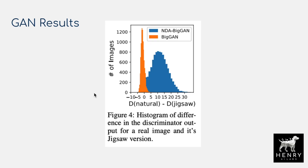The first interesting result applies NDA to the BigGAN training loop, showing the difference in the discriminator's output — its prediction of real versus fake for each image compared to the original and then the jigsaw-augmented version. Without NDA, the discriminator has basically the same prediction for the original image and its jigsaw augmentation, suggesting it's overfitting to local structures. With NDA, the discriminator has clearly learned that the jigsaw image is out of distribution, demonstrating that this prior has been successfully communicated to the discriminator.